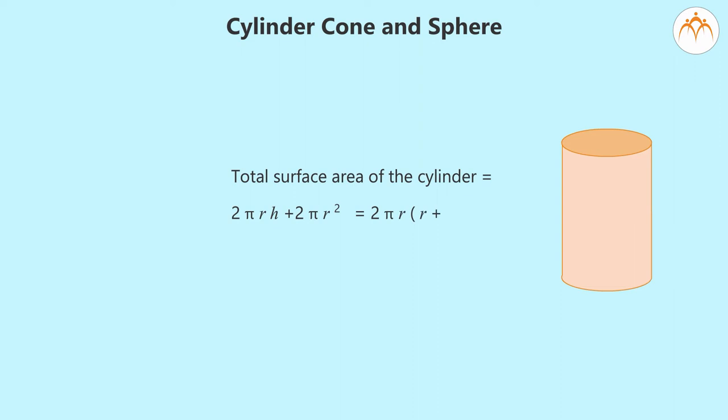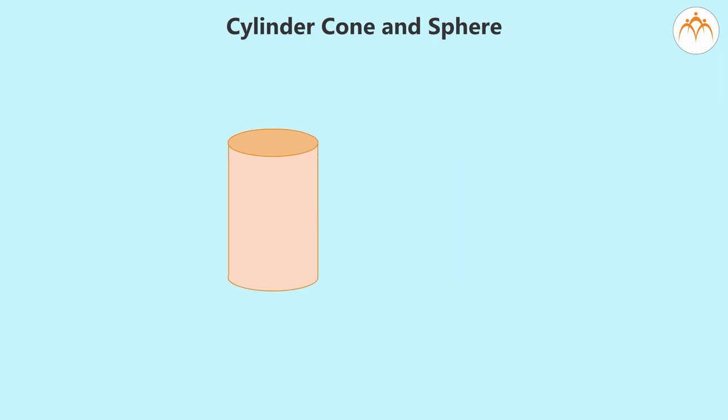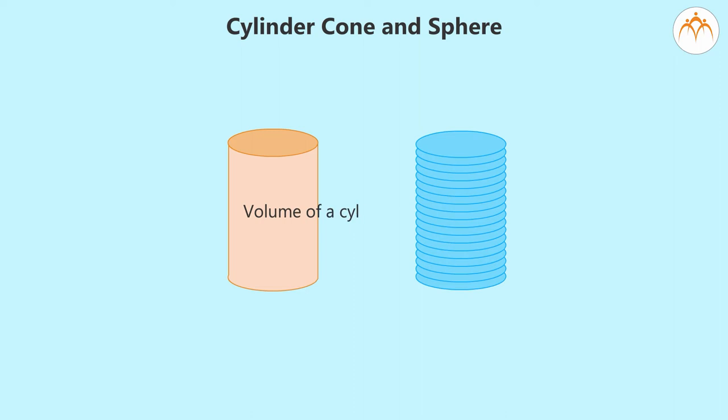The volume of the cylinder can be calculated by understanding that the cylinder is formed by putting circles of radius r exactly on one another till height h is reached. The volume of a cylinder equals πr²h.